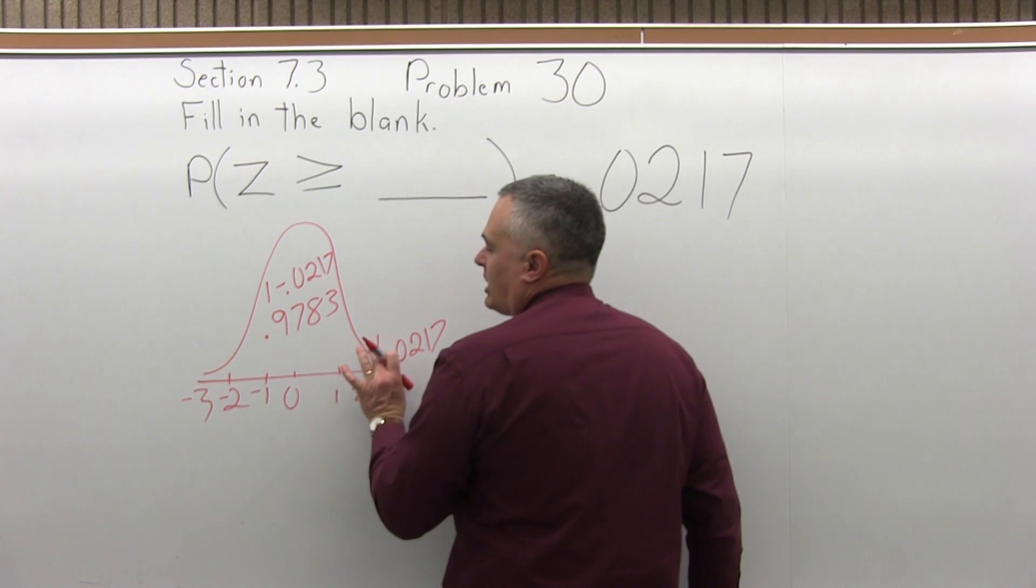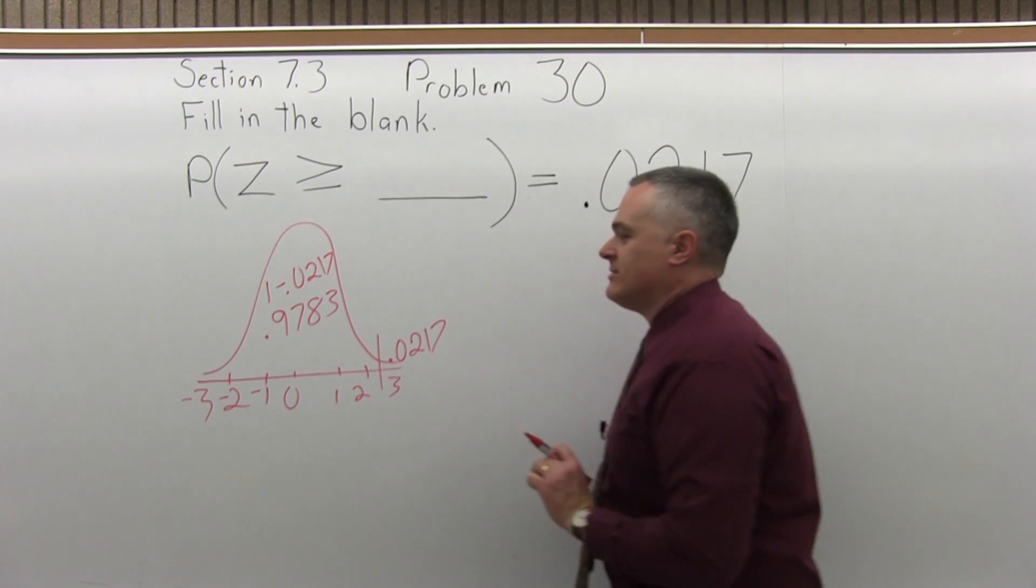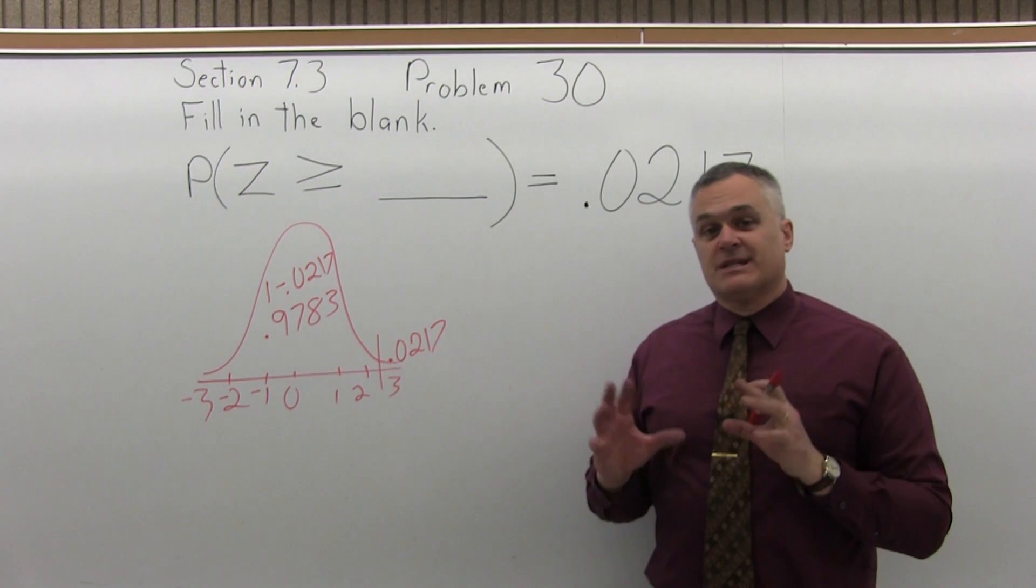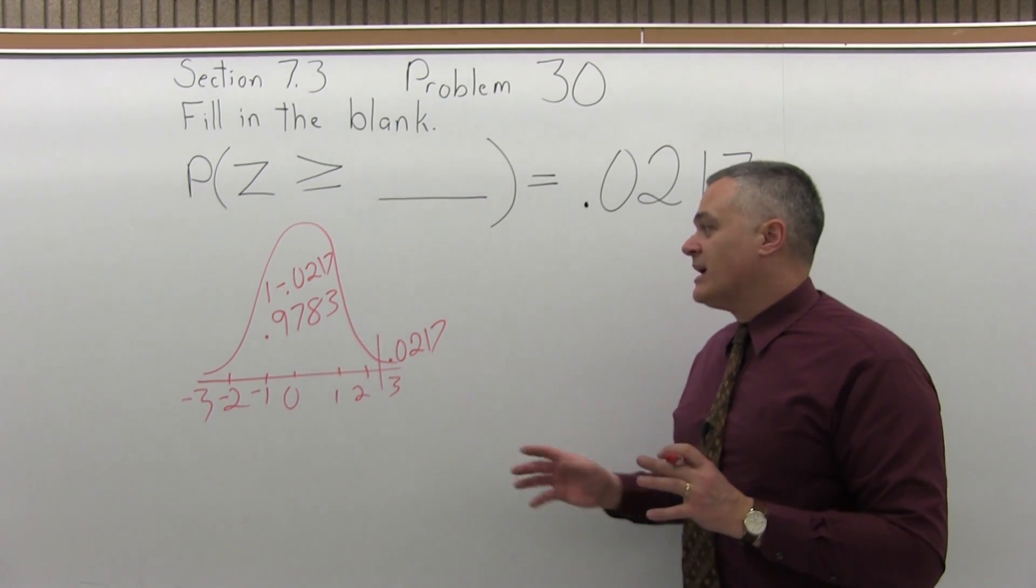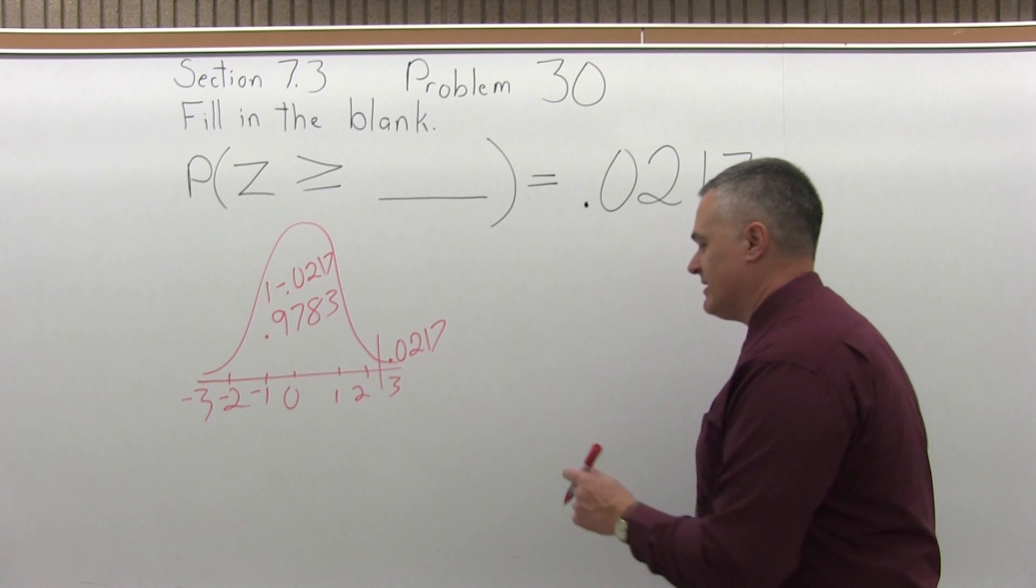That's the value to the left of what I need to find. You're going to look in the center part of the chart and look until you find .9783. It's in there, you'll find it.